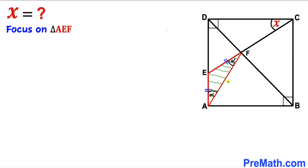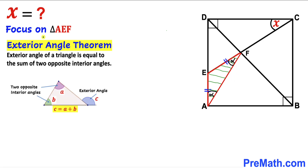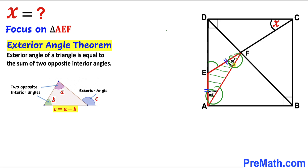Let's focus on isosceles triangle AEF and recall the exterior angle theorem. According to this theorem, the exterior angle of a triangle is equal to the sum of the two opposite interior angles. Here angle C is our exterior angle whereas angles A and B are our opposite interior angles, giving angle C equals A plus B. So in our case this angle is our exterior angle, equal to the sum of the two opposite interior angles: alpha plus alpha gives us two times alpha.